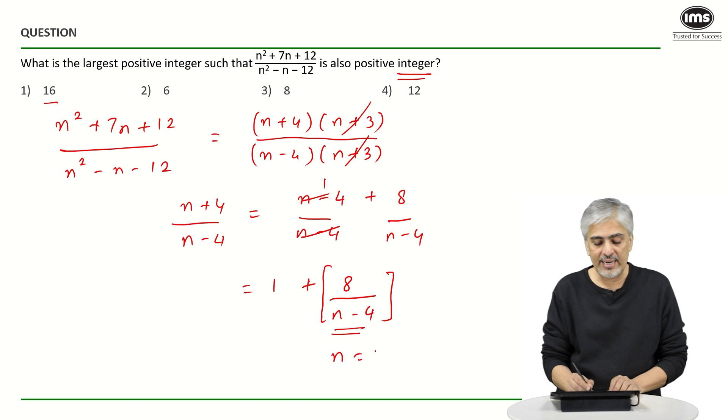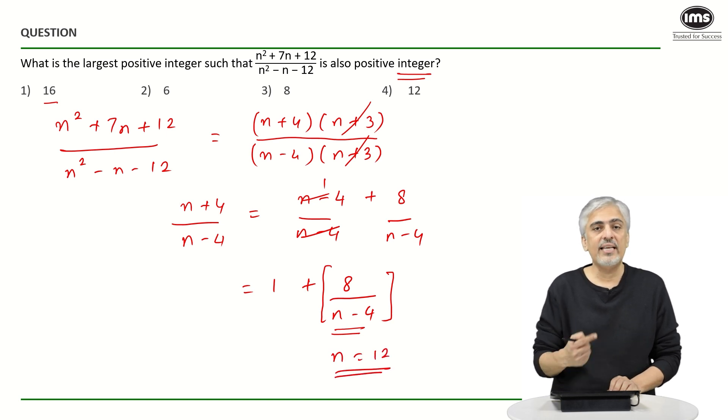So the right answer for this will be n is equal to 12, because at 12, 12 minus 4 becomes 8. 8 upon 8 becomes 1. So answer is the fourth option, 12.